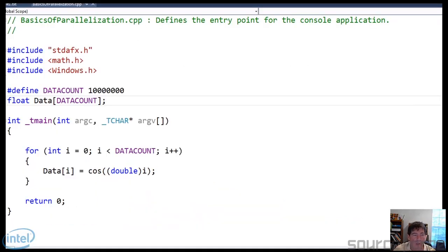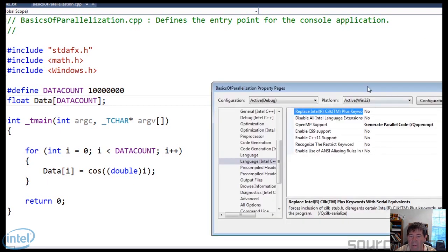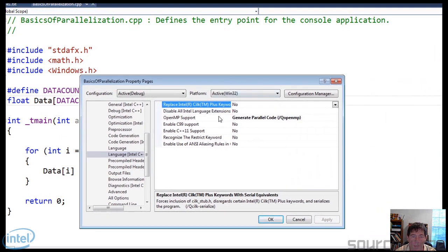So here I have a really simple program to show you how easy it is to parallelize a loop. The first thing I need to show you, though, I'm going to go to Properties and show you that I have OpenMP support turned on for parallelization.